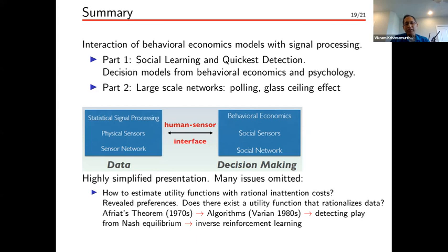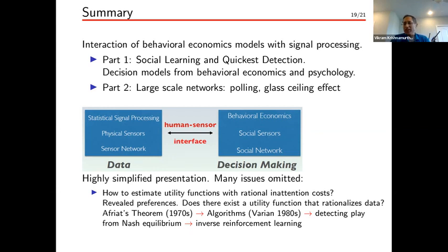In summary, this talk covered two parts, primarily part one: the interaction of behavioral economics with signal processing and control. We did a simple example of social learning and quickest detection with decision models from behavioral economics and psychology, and briefly discussed how to poll large-scale social networks using the friendship paradox. In the big picture, there is strong synergy: statistical signal processing maps to behavioral economics, physical sensors map to social sensors like humans inputting decisions, and sensor networks map to social networks.